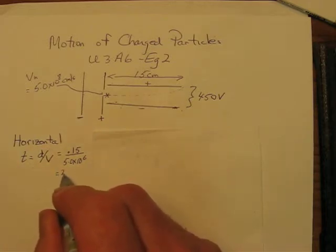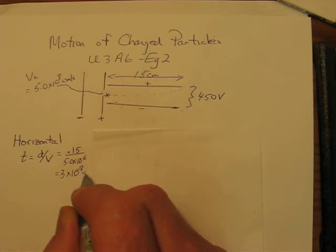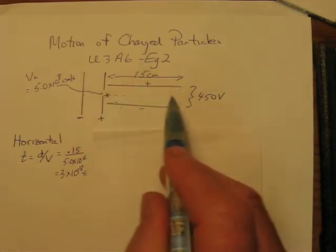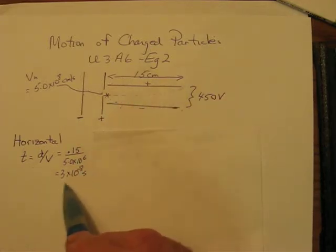That works out to be about 3 times 10 to the negative 8 seconds. What that means is that it was in the deflecting plates for this period of time.